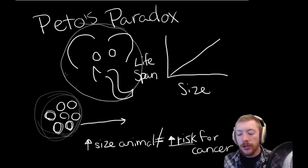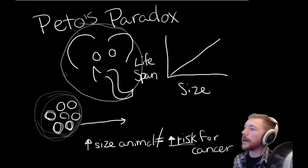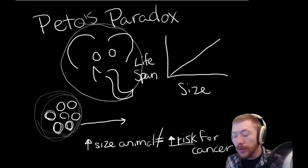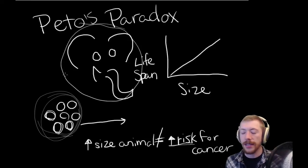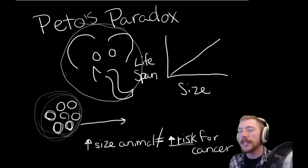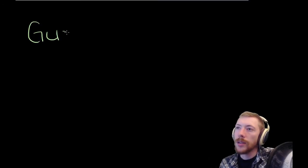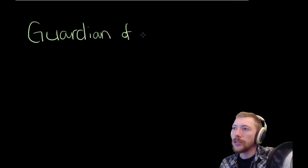What did the authors do to address this question, to address Peto's paradox? There's actually two papers and cumulatively there's like 30 figures. I don't want to go through that much detail in a single video. So I'm going to try to give you guys to the best of my ability this 10,000 foot view of what they found.